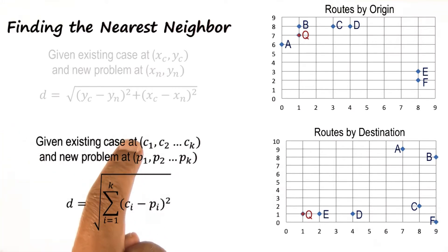In this new formula, both the case and the problem are defined in k dimensions. And we'll find the Euclidean distance between them in this k dimensional space.